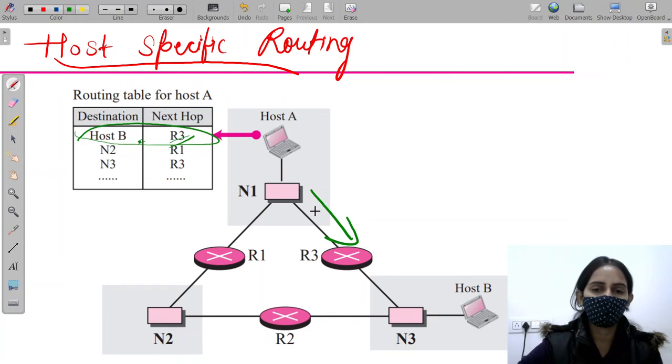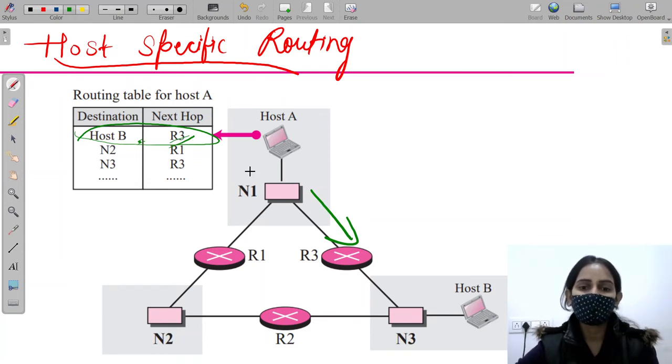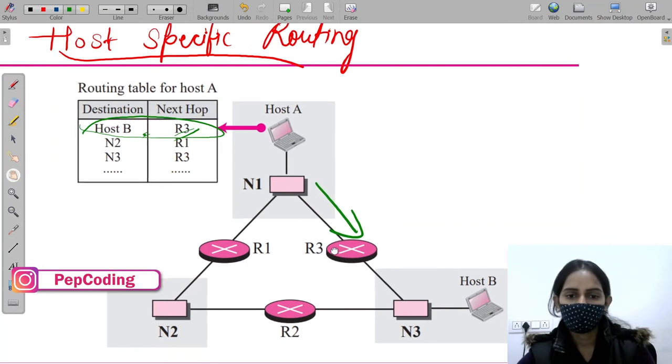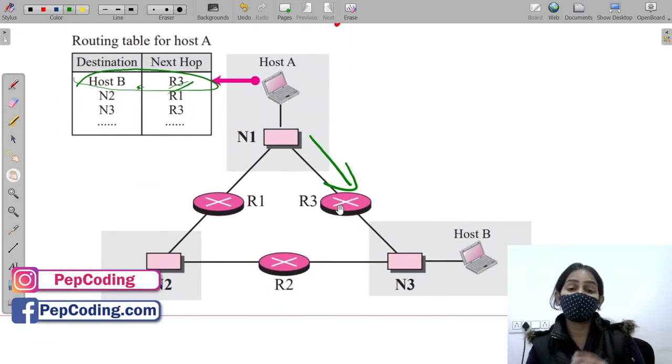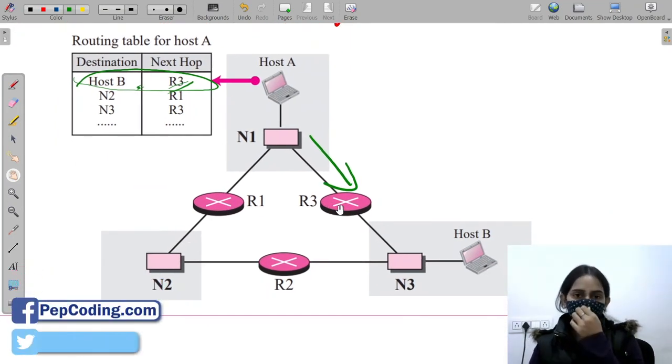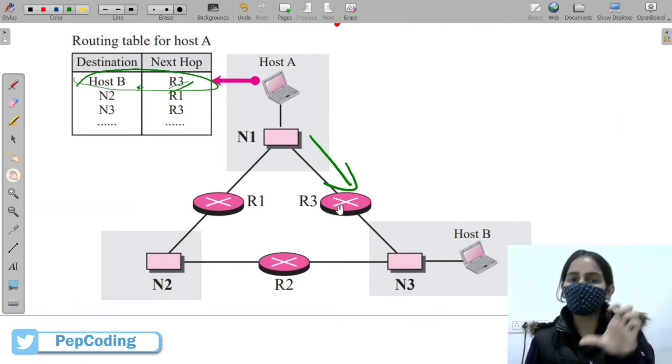For security purposes, basically we use this. The aim we were having to reduce the routing table is not fulfilled in this case.